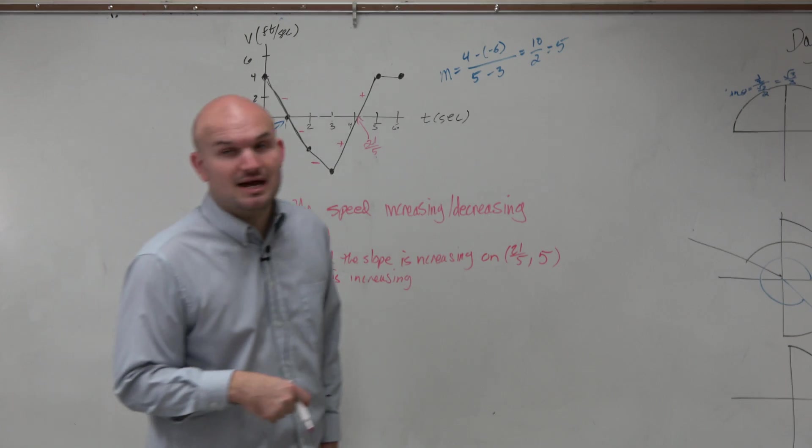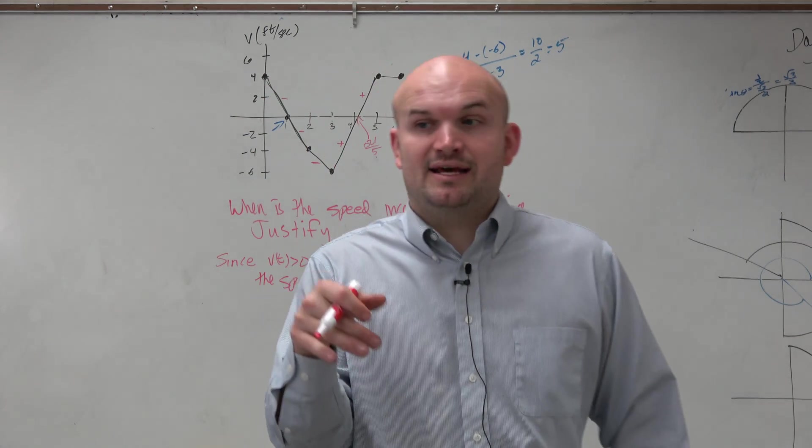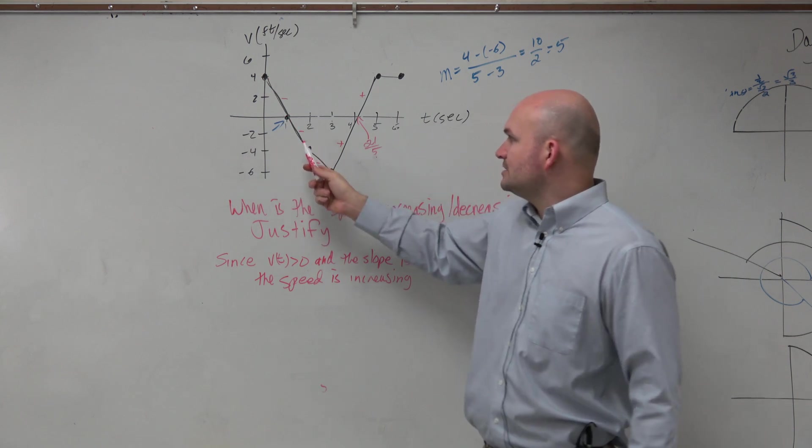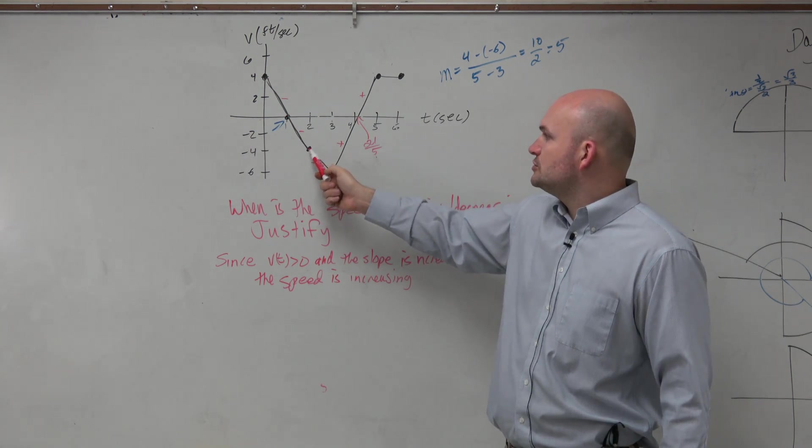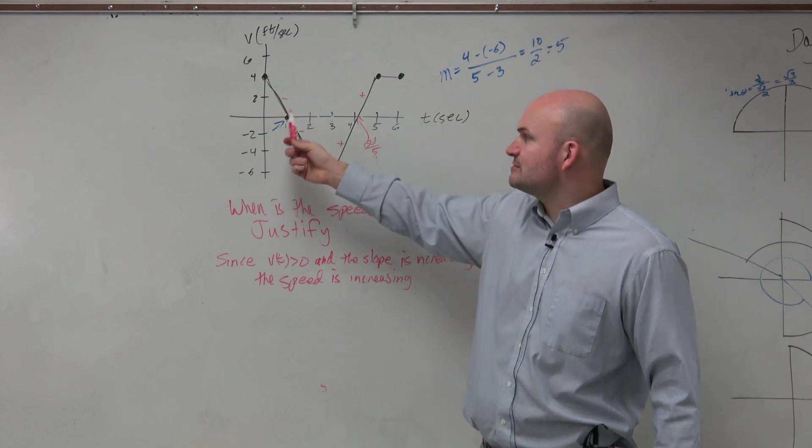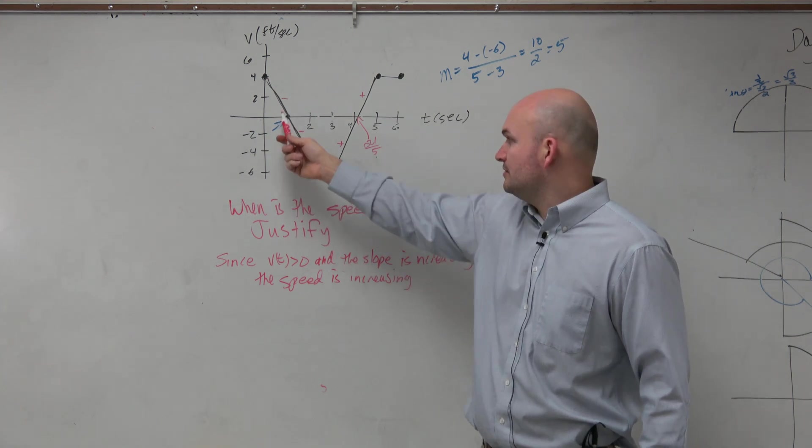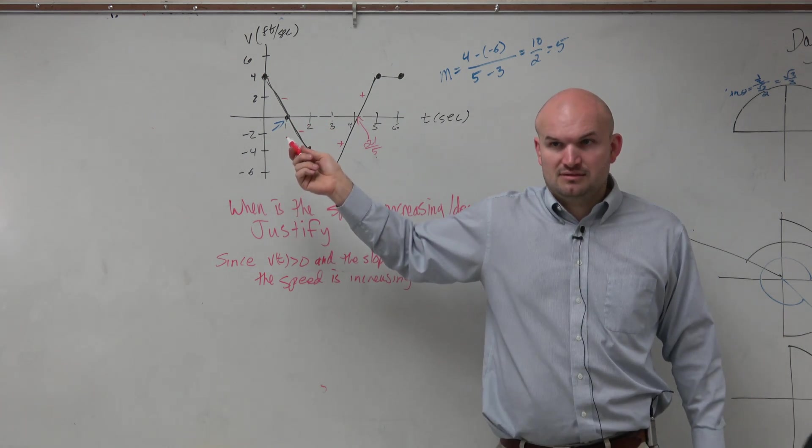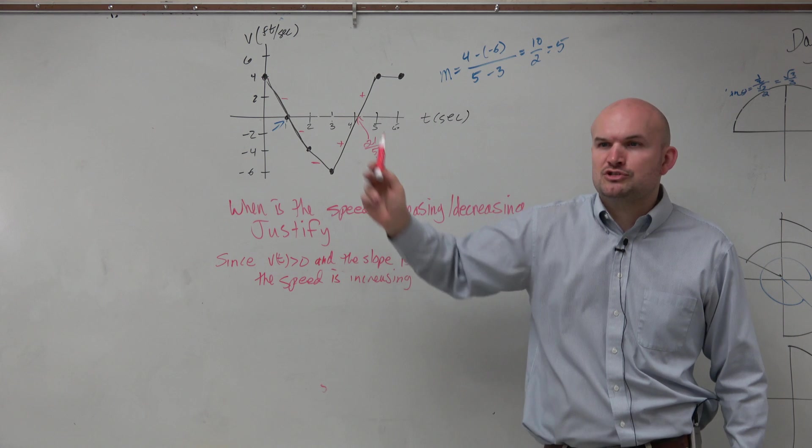So let's figure out the other time when it would be increasing. That's when it's a negative and a negative, right? So we can see that it's negative from 1 to 2 and 2 to 3. Now should I just save myself some time and go from 1 to 3? I'm sorry, the interval from 1 to 3? They're both negative and negative, right?